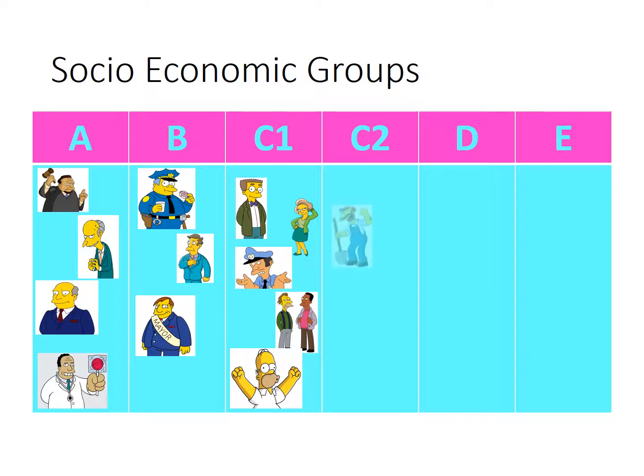Let's look at C2 — skilled manual work. We have Groundskeeper Willie and the captain of the fishing boat. There's a lot of skill involved in being a groundskeeper or a captain, and it's quite physical as well.